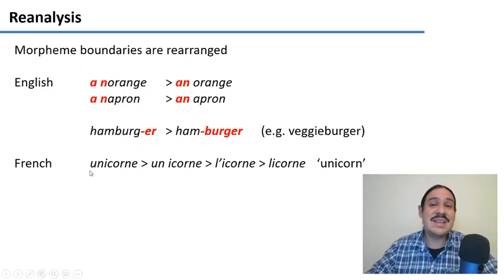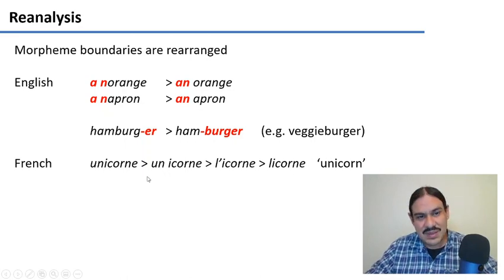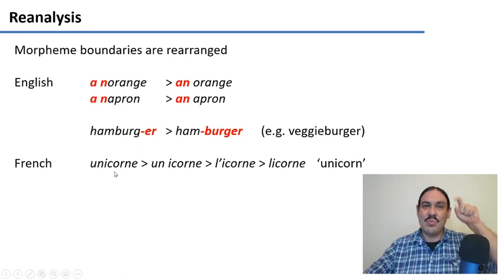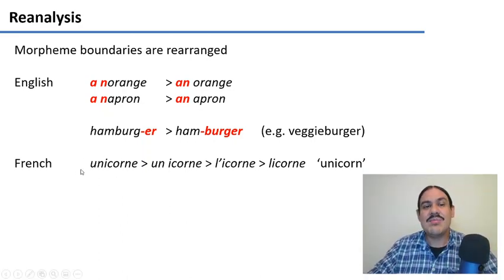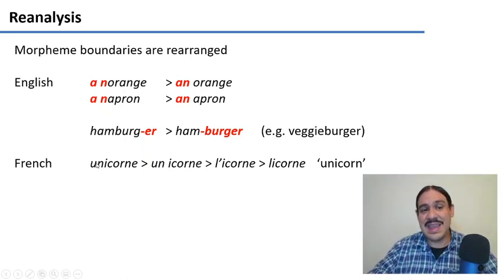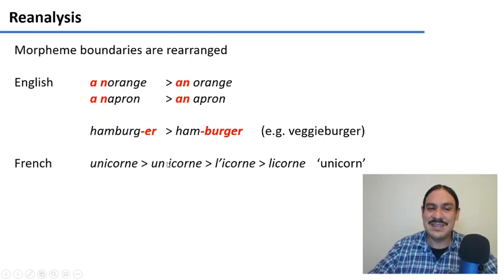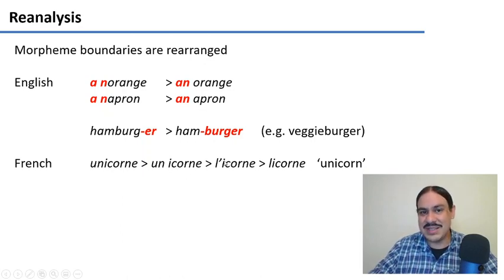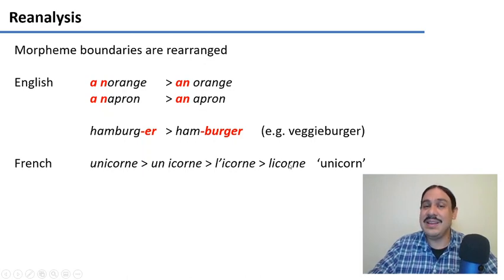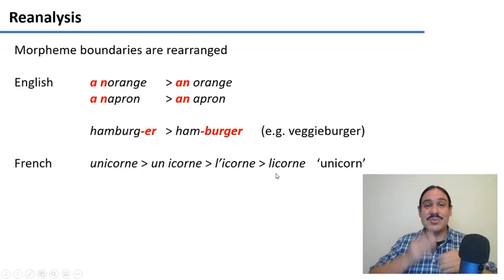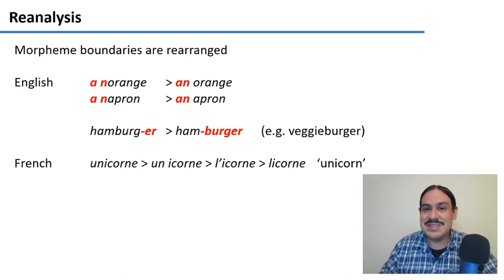If you speak French, an illustrative example of this is the word 'licorne,' meaning unicorn. In Latin it was 'unicornius' — like 'one horn.' The 'uni' meant one. But the 'un' resembled the determiner in French, as in 'un licorne' — a unicorn. So because 'un' resembled the determiner, it was split from the word, and this became 'un icorne.' Over time, 'icorne' came to be associated with the other determiner — the definite one — 'licorne,' and these became fused, and now we have the word 'licorne.' So you can see how the word was chopped up and fused back together multiple times until we got the modern form.